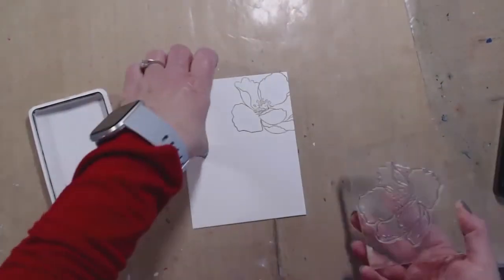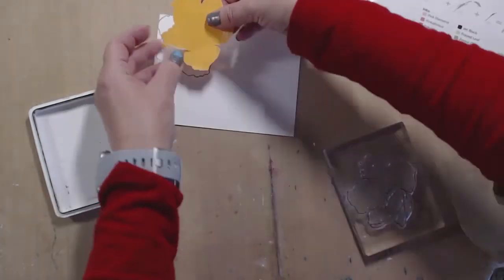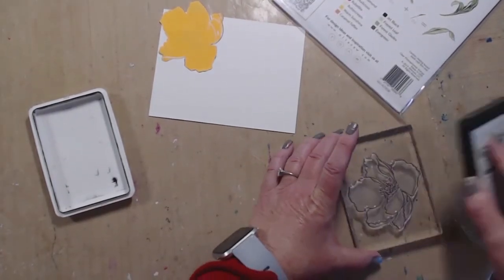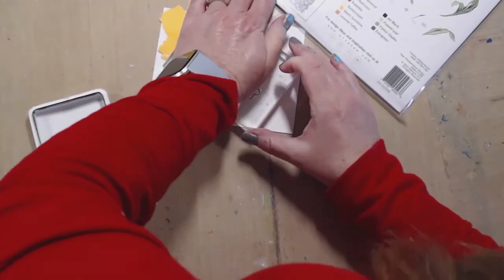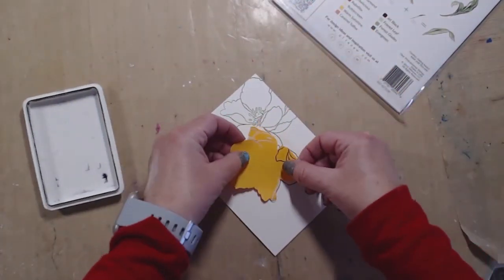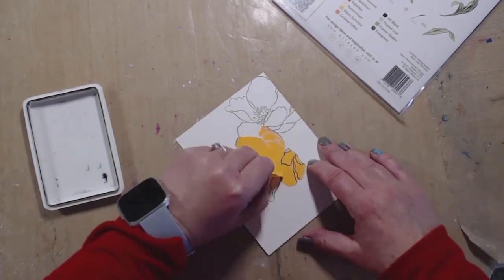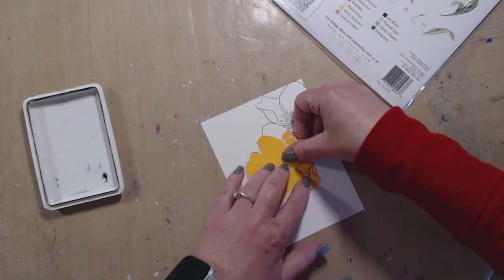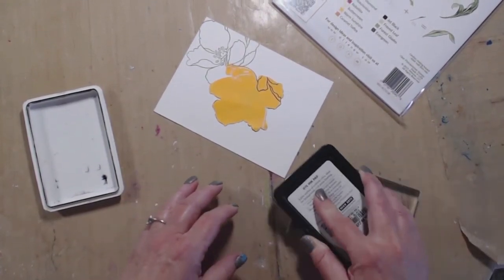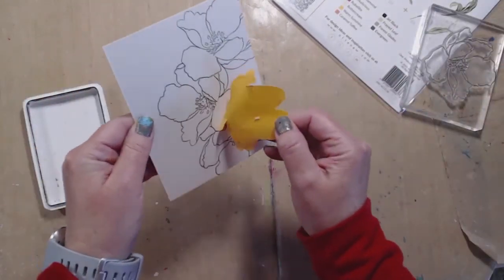So I have black Hero Arts ink and I'm just using the outline of the flower. Now I'm covering it up with a mask that I made from a full adhesive sticky note, then I'm moving that mask over and stamping again so that I've got a design here. I was going to do the whole background but decided after I stamped this third time that I kind of liked the way it looked as is.